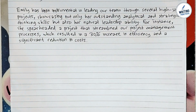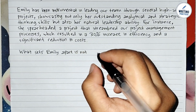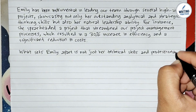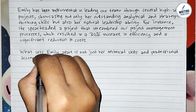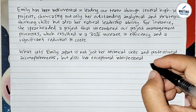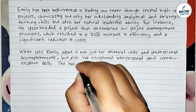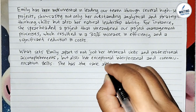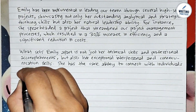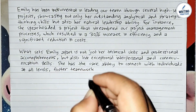In the third paragraph, this is the place you write about the candidate's interpersonal skills. Describe the candidate's interpersonal and communication skills. For example: 'What sets Emily apart is not just her technical skills and professional accomplishments, but also her exceptional interpersonal and communication skills.' Mention also leadership and teamwork — highlight the candidate's ability to lead, foster teamwork, and connect with colleagues at various levels. For instance: 'She has the rare ability to connect with individuals at all levels, foster teamwork, and motivate her peers towards achieving common goals.'